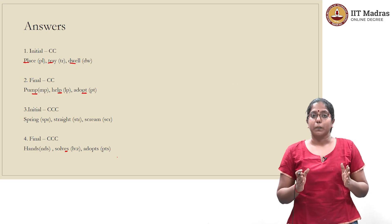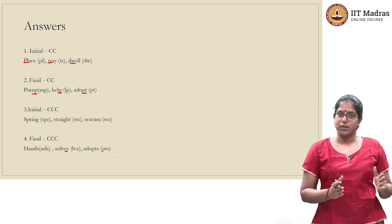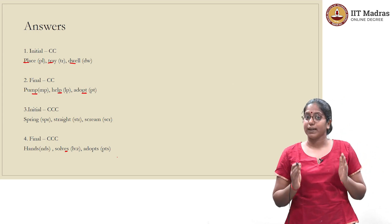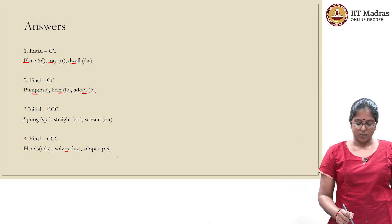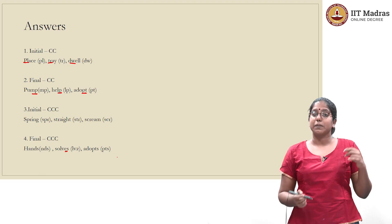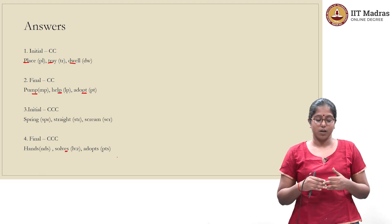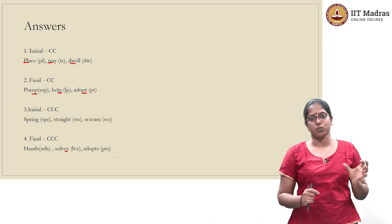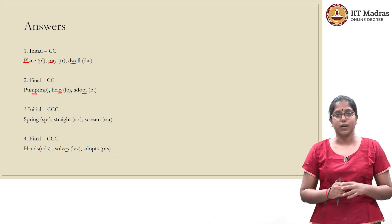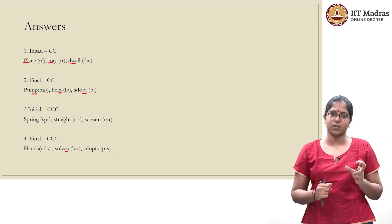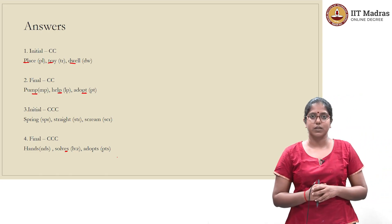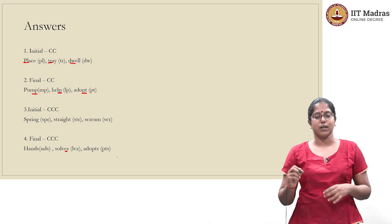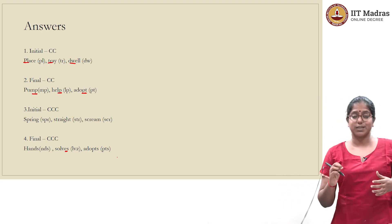Focus on consonant sounds, not letters. In solves, it is the 'l', 'v', and 's' sounds at the end of the word — those are the final consonant clusters. You do not say 'solve-sa'; it is 'solves' — 'l', 'v', 's'. The third word is adopts: 'p', 't', and 's'.